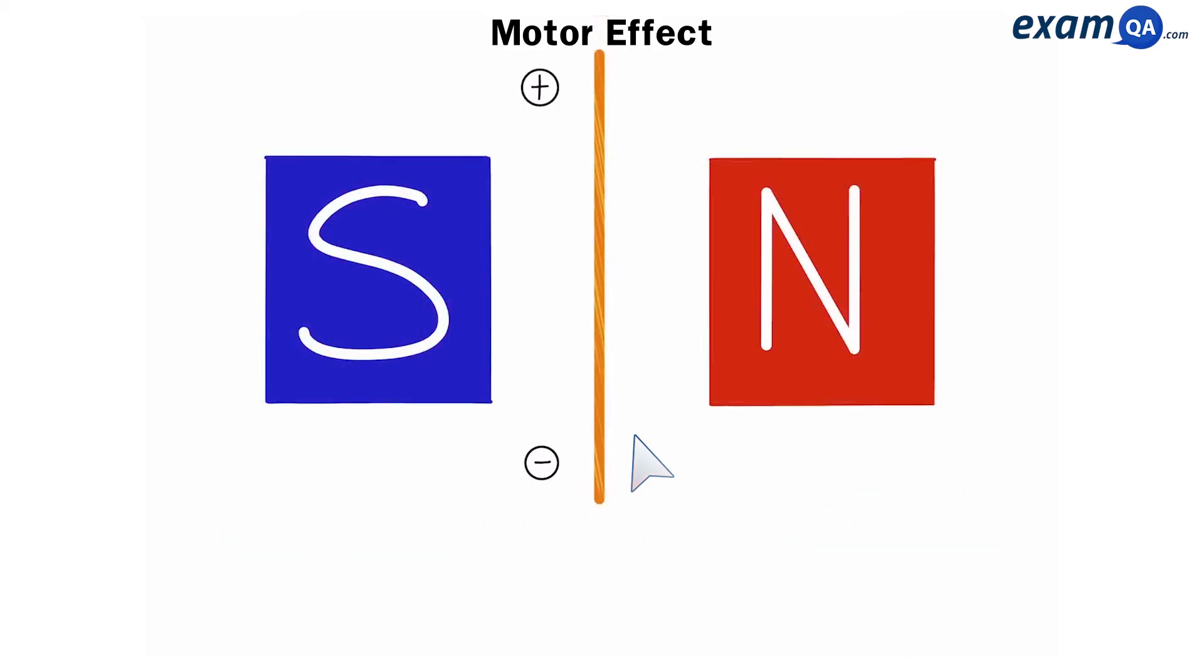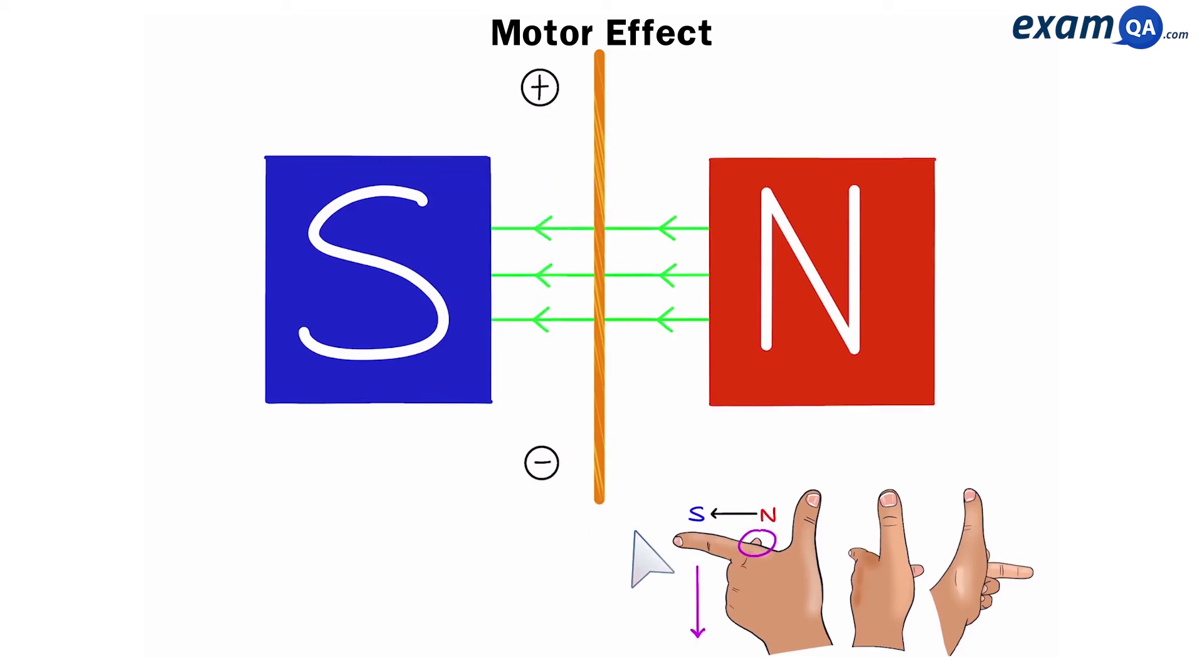Here's another question. Let's see if we can work out which way the wire is going to move. Again, we're going to need our left hand, and the magnetic field is pointing from north to south in this direction. We're going to move our wrist so that we can point from north to south like that. Perfect. Next, let's look at the current. Plus to minus is going downwards. So again, moving the wrist until we meet both lines. North to south and plus to minus. Now we can look at the thumb, and the thumb says that the wire is going to move away from you, into the paper.